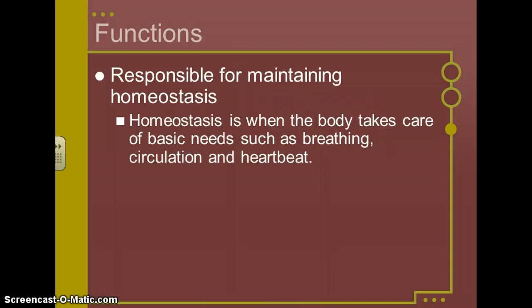The final function is that the nervous system is responsible for maintaining homeostasis. We've talked about homeostasis before in previous chapters, but just a reminder that homeostasis is where your body tries to keep everything in balance and is taking care of your basic needs, like breathing, circulation, heartbeat. So basically all of the things that you are not in conscious control of, your nervous system is in control of.